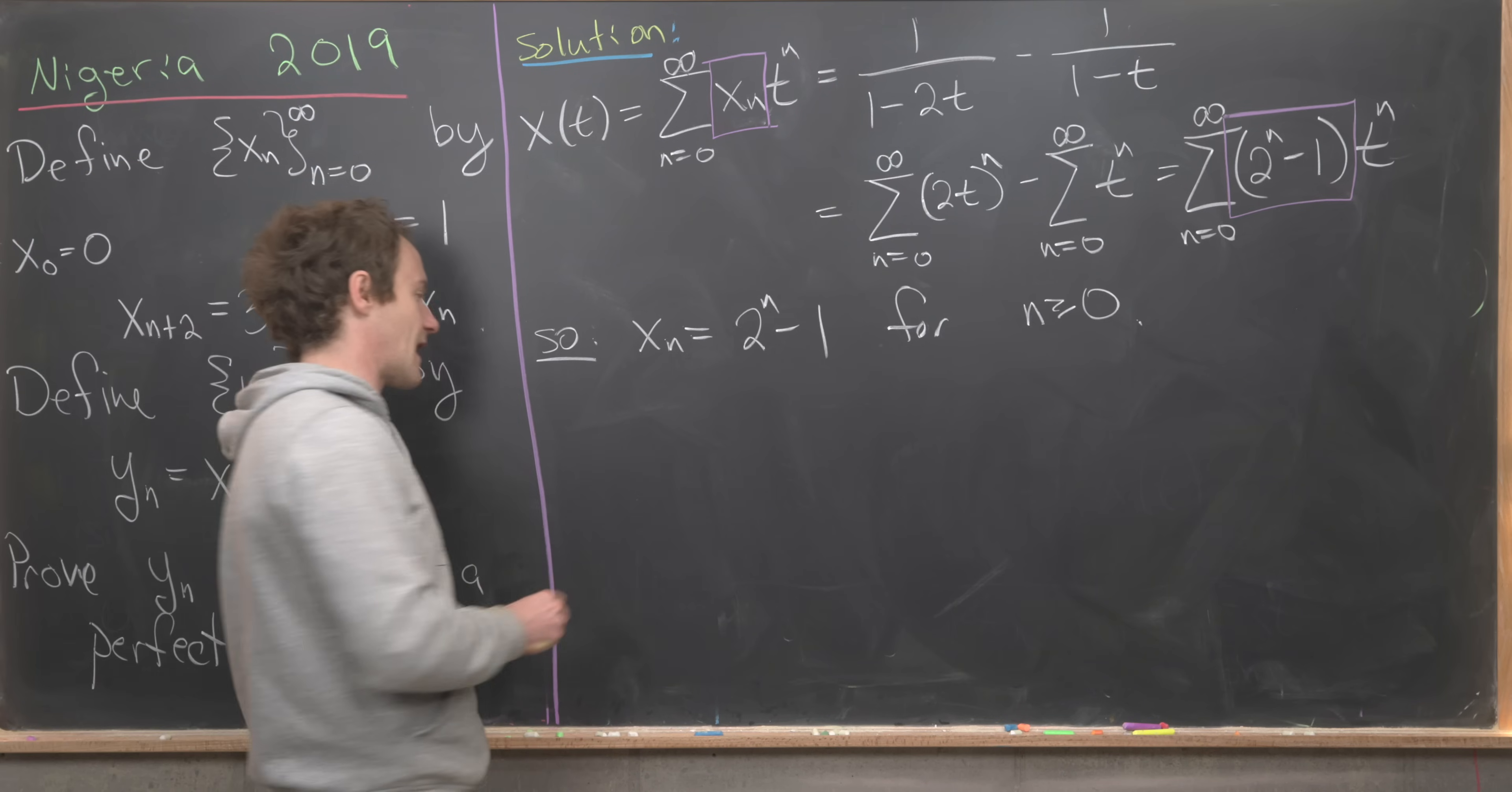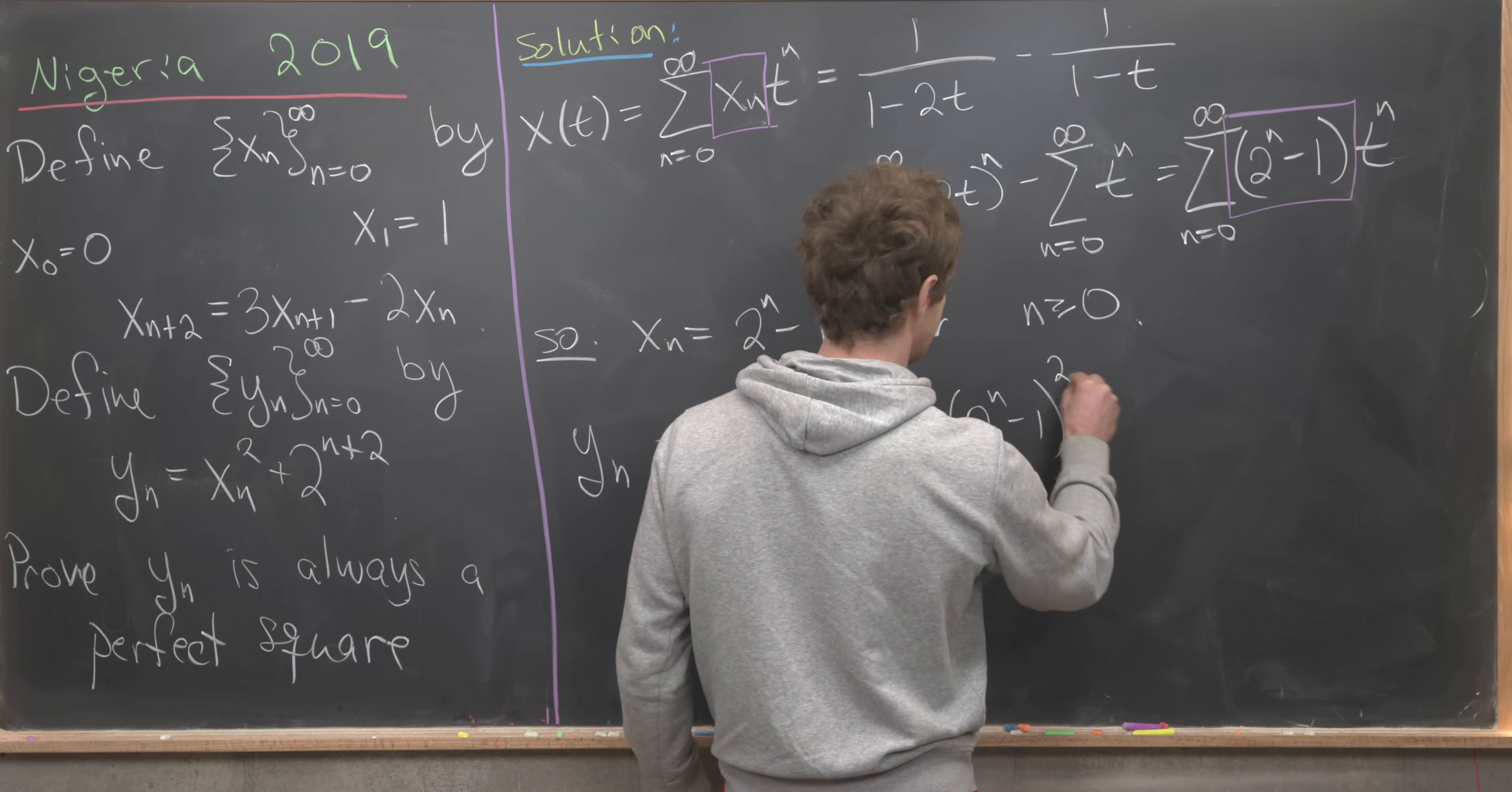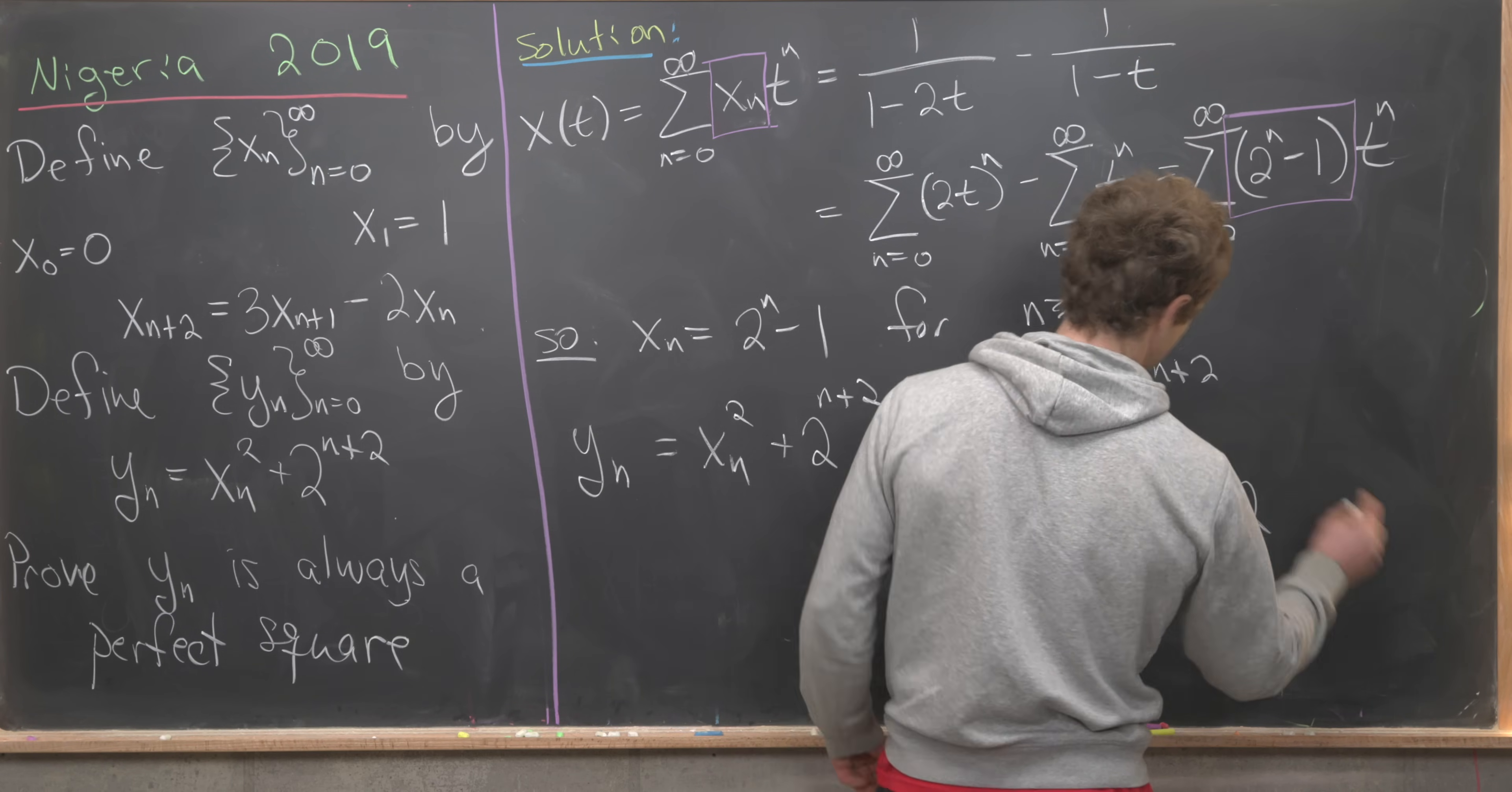Now let's look at our y sub n. y sub n is going to be x sub n squared plus 2 to the n plus 2. Hopefully this is a perfect square and hopefully that's easy to see given this form for x sub n. We've got 2 to the n minus 1 quantity squared plus 2 to the n plus 2. Multiplying this out we'll get 2 to the 2n minus 2 times 2 to the n plus 1, plus then I'm going to rewrite this as 4 times 2 to the n.